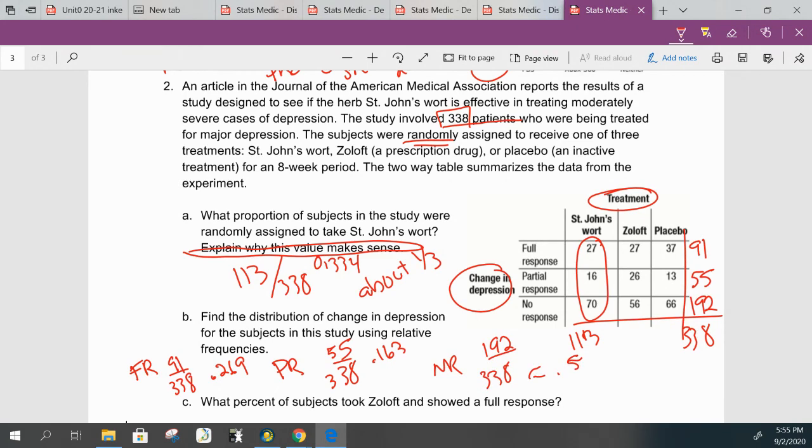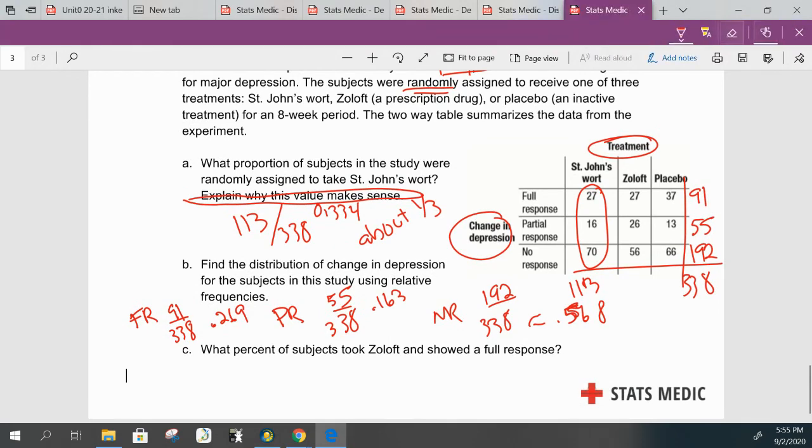What percent of subjects took Zoloft and—that makes it a joint, not a conditional. Anytime I see joint, we're going to connect two rows and full response. So what I'm looking for is full response and Zoloft, and that is right there at 27. So we have 27 over 338 again, which is about 0.08 or 8 percent. And they specifically said percent, go ahead and change it. Hopefully y'all remember how to go from decimal to percent. You have an individual assignment that's very similar to this that you're going to complete in Schoology under assignments, and I'll see you guys tomorrow.